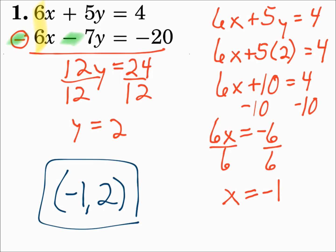x is negative 1 and y is 2. When the signs are the same on the variable you're eliminating, subtract the equations. Everything else is the same method. Just remember, when the signs are the same, subtract the equations.